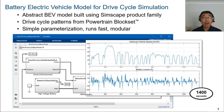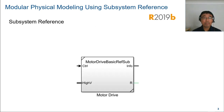Next, I will show the modular physical modeling technique. From 2019B, Simulink provides a new type of subsystem called subsystem reference, which enables streamlined reuse of subsystems.